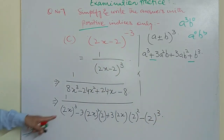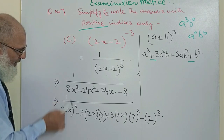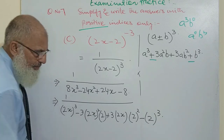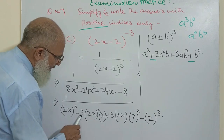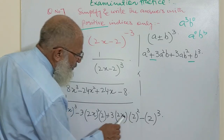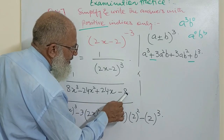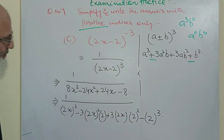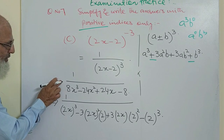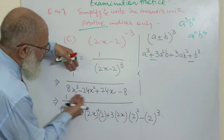So if you just solve this: 2³ is 8; here it is square so it becomes 4x² multiplied by 6 is 24x²; again 4 multiplied by 2 is 8, multiplied by 3 is 24x. You can do the detail steps first to understand, or if you are in a commanding position you can do it directly like this.